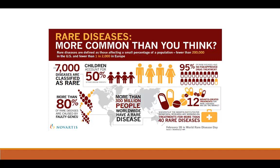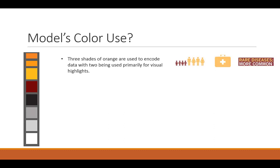My color model uses a similar set of colors for similar functions. Instead of using two shades of orange, it uses three shades of orange because in a number of places it needs an additional highlight color that wasn't required in my own graphics. It does encode primary data symbols in orange and the title in orange as well.